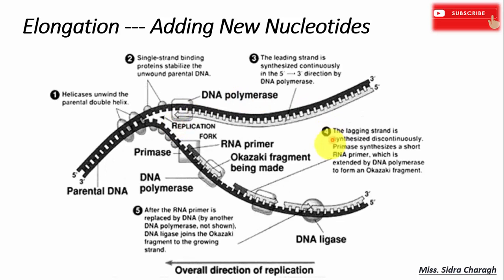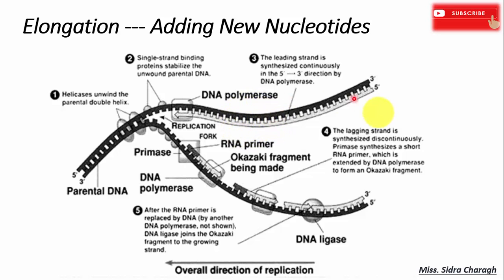In elongation, a primer attaches to the single-stranded DNA and DNA polymerase III extends the RNA primer made by primase. DNA polymerase also possesses a catalytic site for polymerization and degradation of nucleic acid strands. DNA polymerase makes DNA in the 5' to 3' direction. On the template strand with 3' to 5' orientation, a new DNA molecule is synthesized continuously.